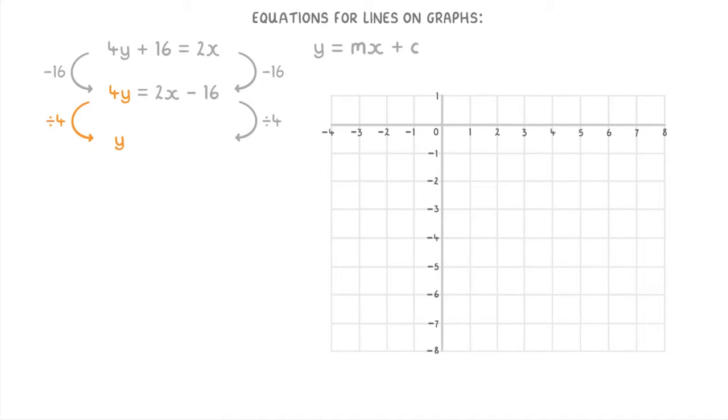And then divide both sides by 4, so that we only have a single y on the left, which will equal one half x minus 4 on the right.